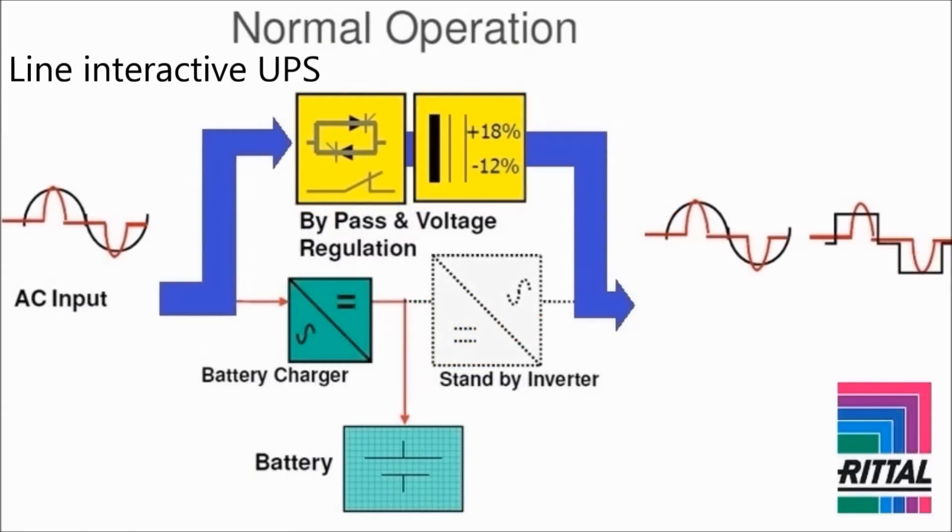Similar to the standby or offline UPS, during normal operation, the line interactive UPS passes the AC input through a bypass switch to the output. But the line interactive UPS also includes a voltage regulator capable of smoothing out spikes in the supplied AC power before feeding through to the output. However, like the bypass UPS, the line interactive UPS does not protect equipment during the change over time between failure of mains power and inverter startup.